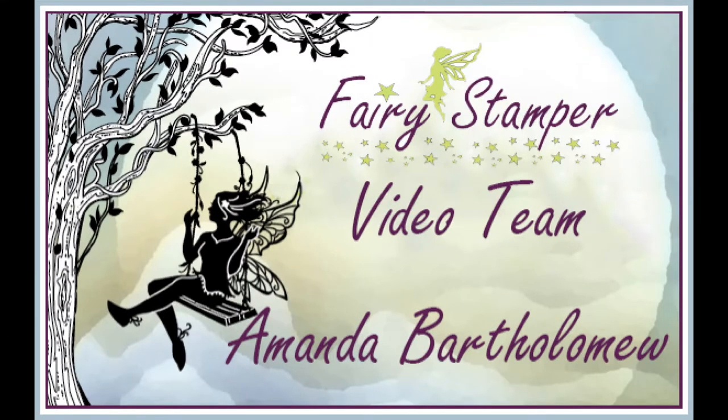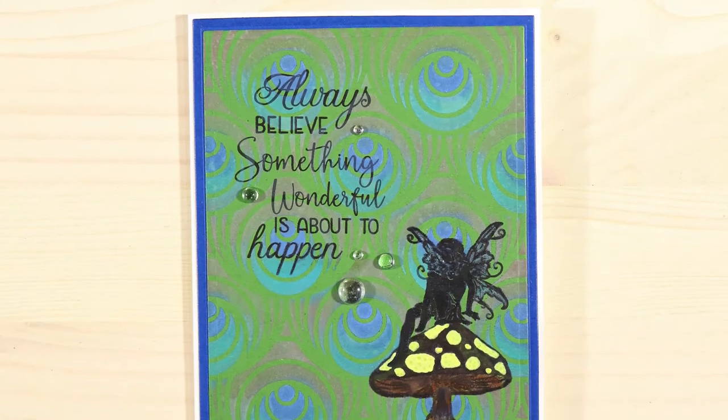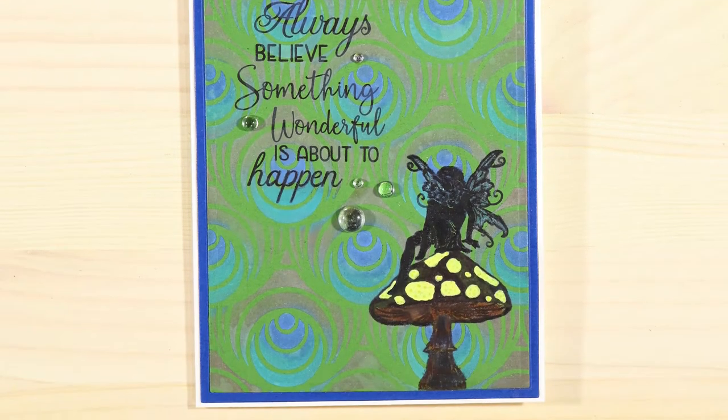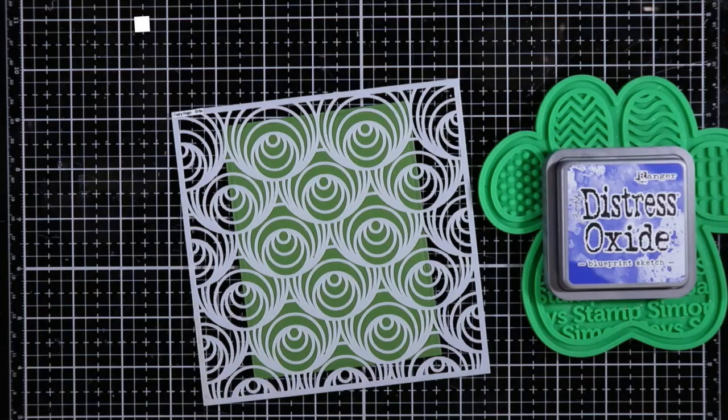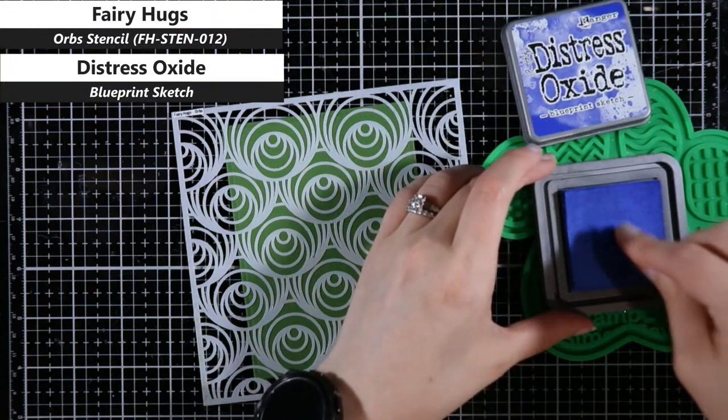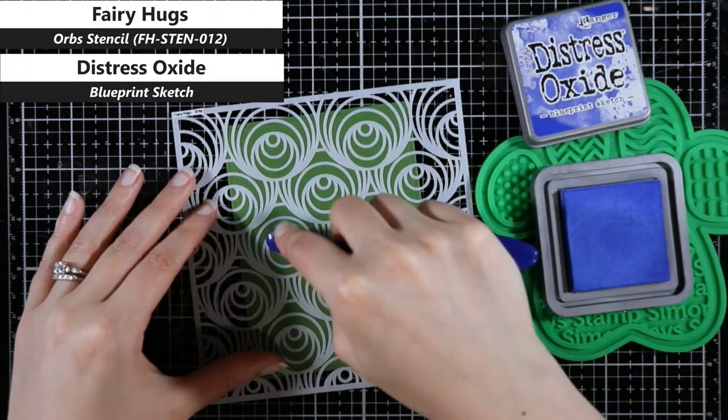Hey, this is Amanda back with another Fairy Stamper video. Today I'm going to be using the orb stencil to make it look like a peacock feather stencil. That's what I saw when I purchased this stencil—peacock feathers—and so that's what I'm going to be doing today.